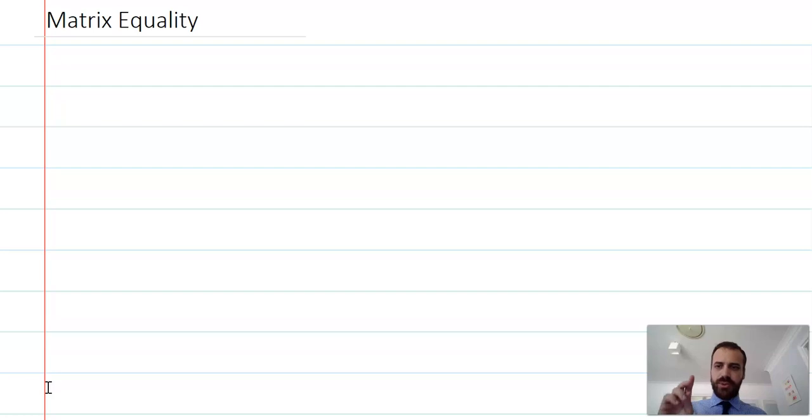Two matrices are equal if and only if they have the same order. They're the same size. So a two by three matrix would have to see another two by three matrix.